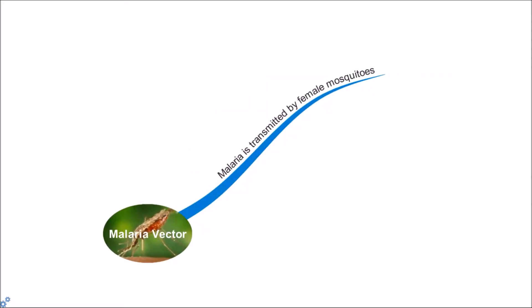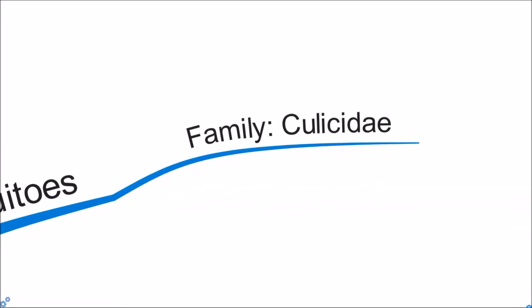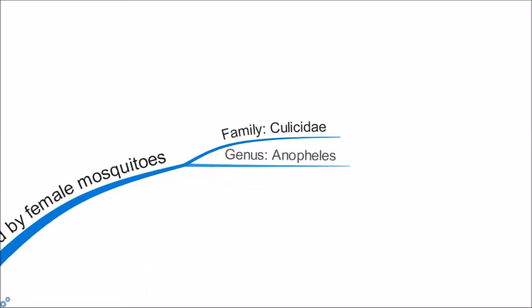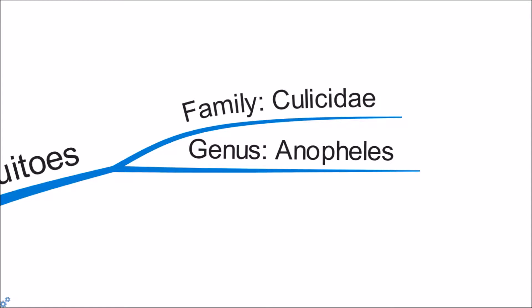Malaria vector. Malaria is transmitted by female mosquitoes of the family Culicidae. With about 3,300 species of mosquitoes grouped into 41 genera, human malaria is transmitted by only females of the genus Anopheles.